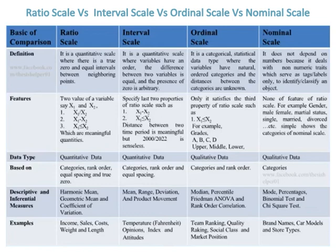In ratio scale, two values of a variable — say x1 and x2 — are based on three properties: feature 1 is x1 divided by x2, feature 2 is x1 minus x2, and feature 3 is x1 is less than or equal to x2, which are meaningful quantities. In interval scale, only the last two properties of ratio scale apply: x1 minus x2, and x1 is less than or equal to x2 — distance between time periods is meaningful, but 2000 divided by 2022 is senseless.